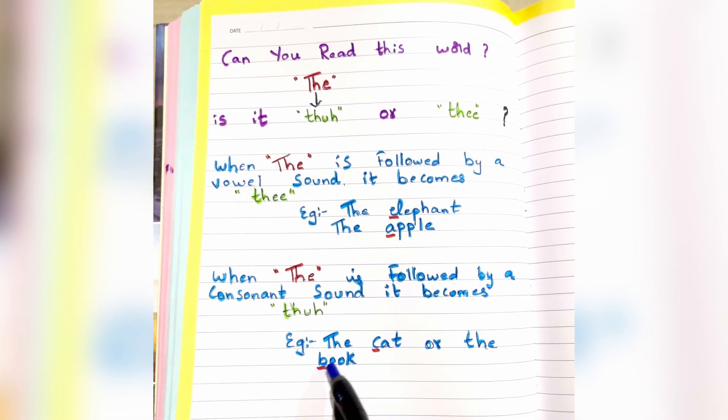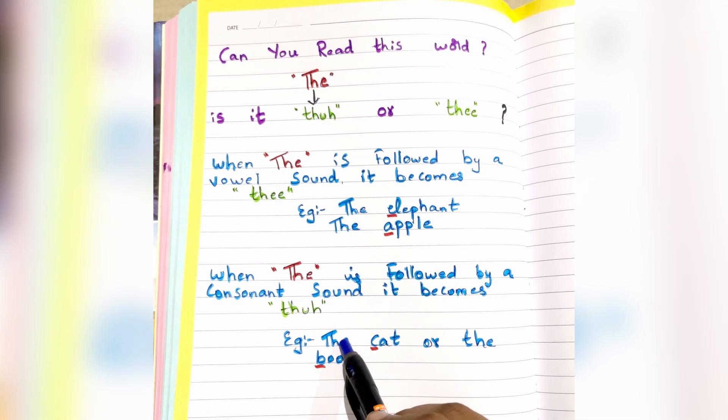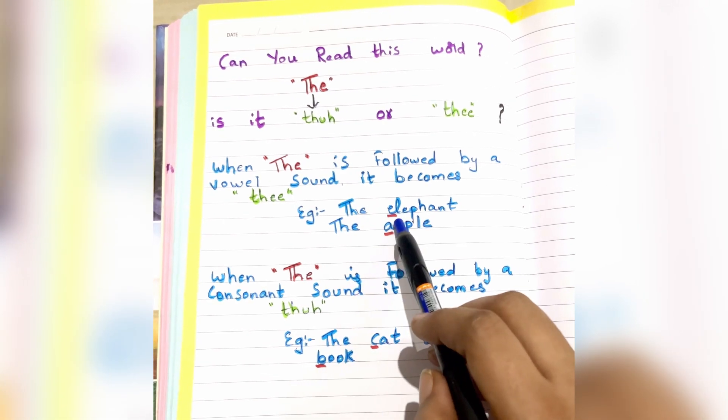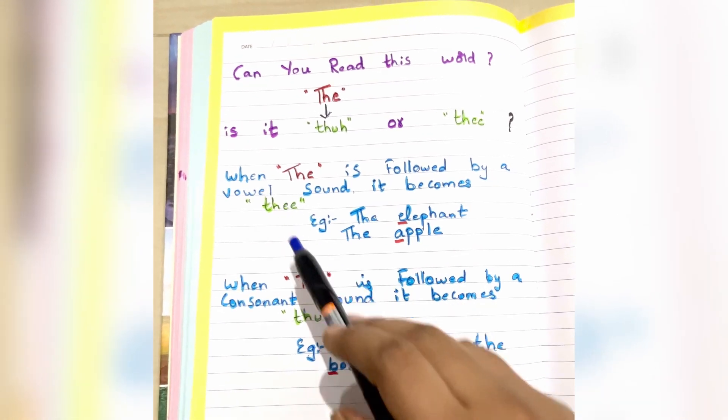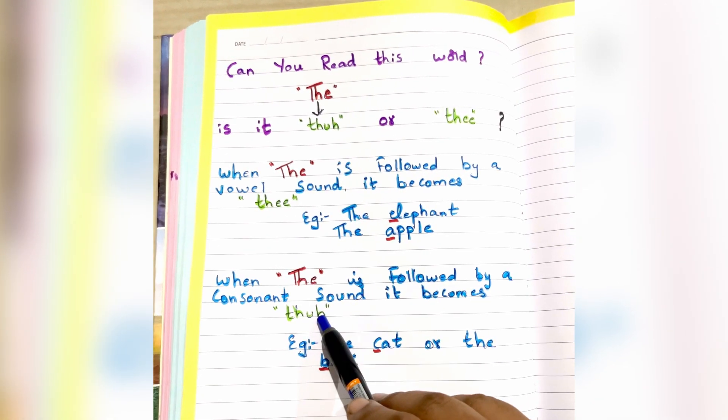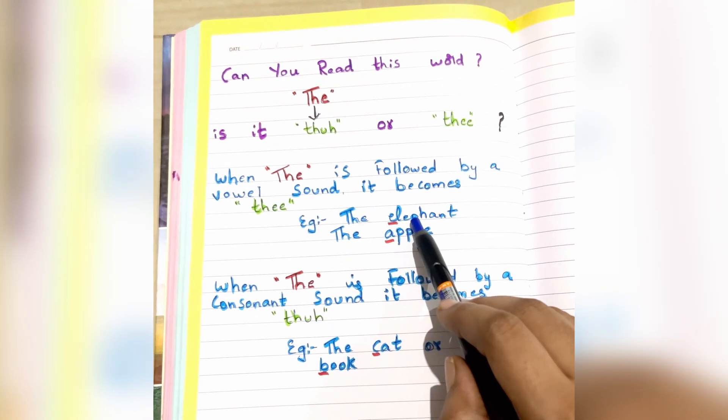B is a consonant. When it's followed by a consonant, we call it 'thuh'. In simple terms: if it's a vowel, use 'thee'; if it's a consonant, use 'thuh'. Hope it was useful.